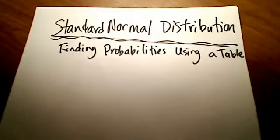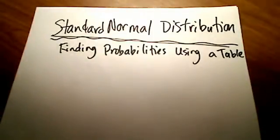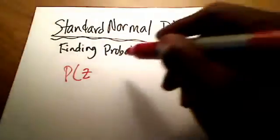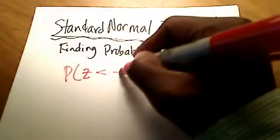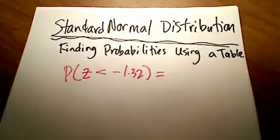In this video, I want to show you how to find, using a standard normal distribution table, how to find probabilities that are of interest. For example, if you are asked to find the probability that z is less than negative 1.32, using a table, how can we actually find that value?